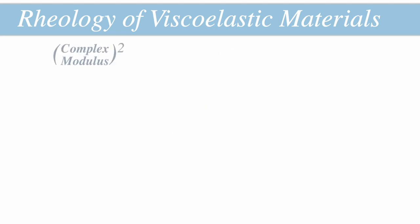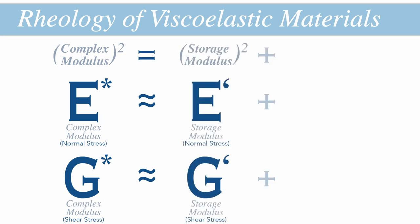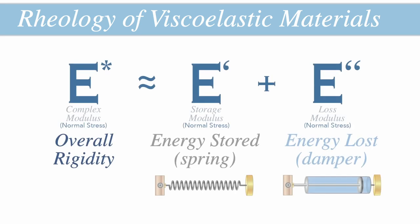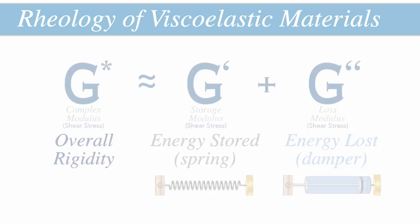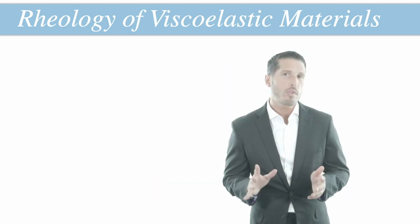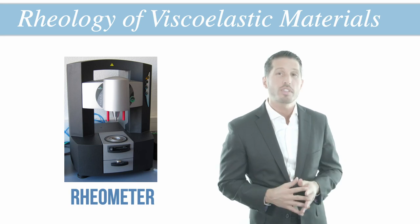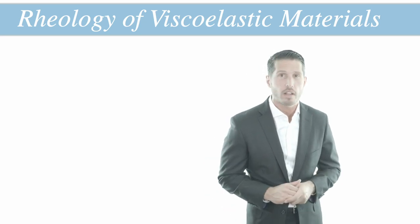So the modulus of elasticity for a viscoelastic material must take into account both the elastic energy-storing component and the viscous energy-dissipating component in order to help us predict the behavior of hyaluronic acid gels. This is achieved through the calculation of what is known as the complex modulus, represented by E* for normal stresses and G* for shearing stresses. The complex modulus of elasticity is equal to the Pythagorean sum of the elastic component called the storage modulus — represented by E prime and G prime — and the viscous component, also called the loss modulus, represented by E double-prime and G double-prime. The complex, storage, and loss moduli can all be easily measured with a device known as a rheometer, which delivers a known stress to a sample of gel and measures the resultant strain.